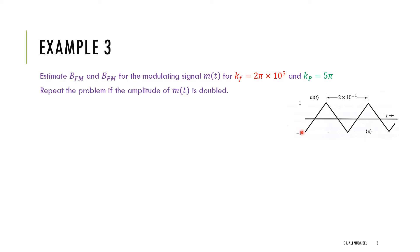The problem also says: repeat if the amplitude of the message is doubled — so instead of going from minus 1 to 1, it will go from minus 2 to plus 2. We start with Carson's rule for FM.